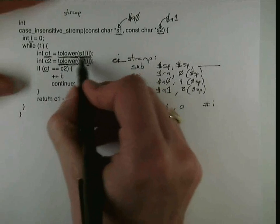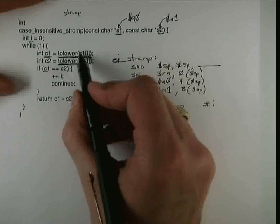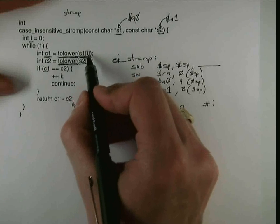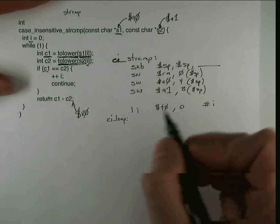So we first have to read the character and we do that by adding the address of S1 to the value I because each character is a single byte.